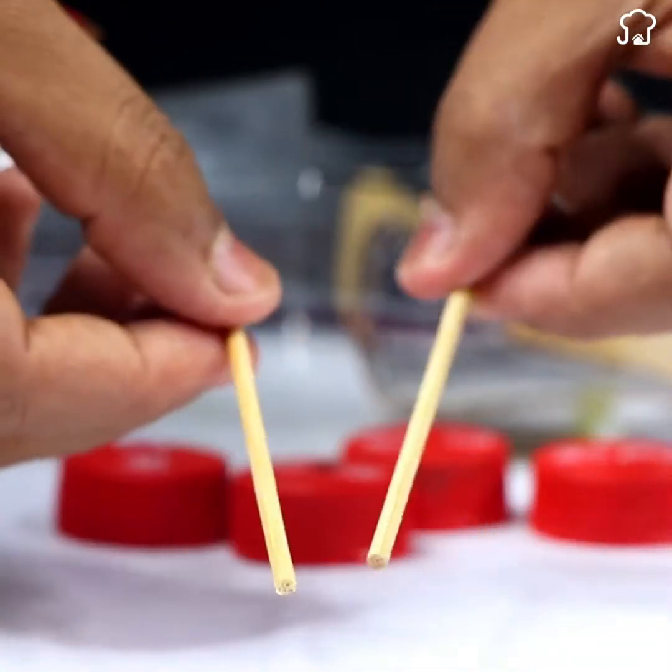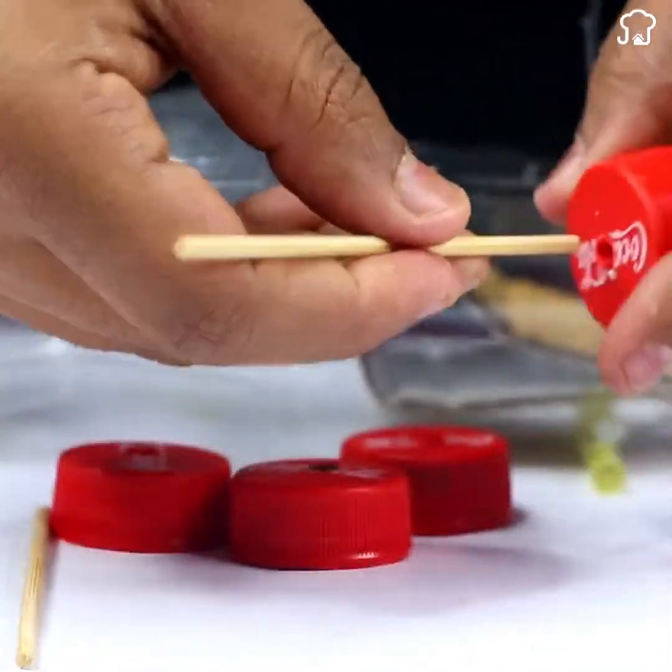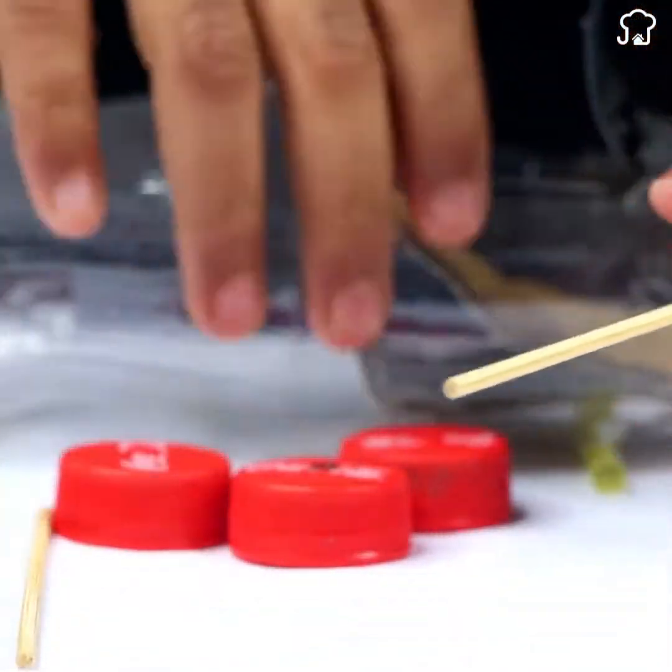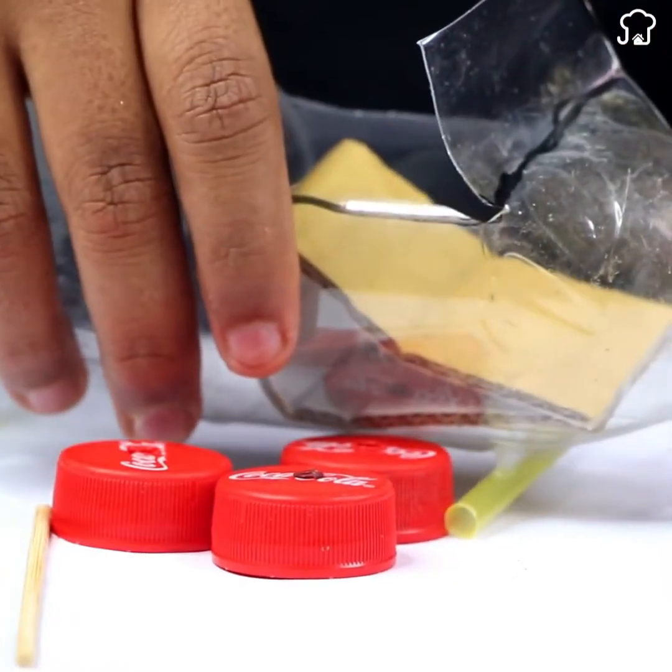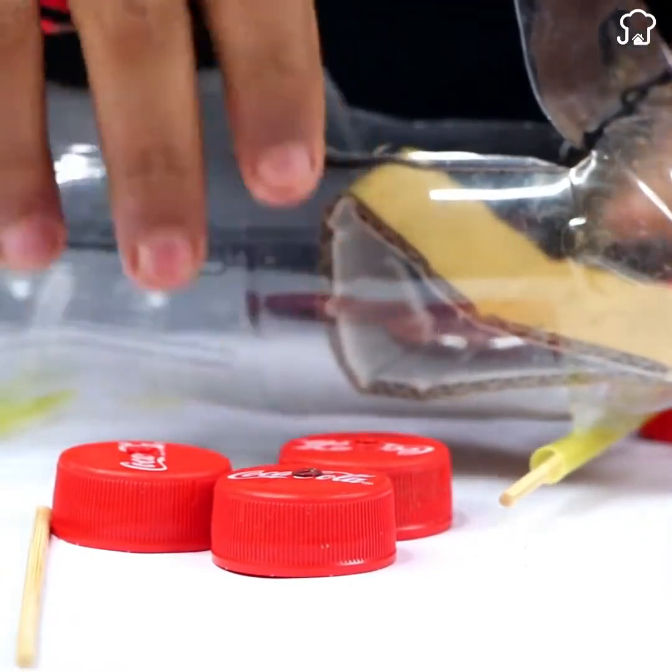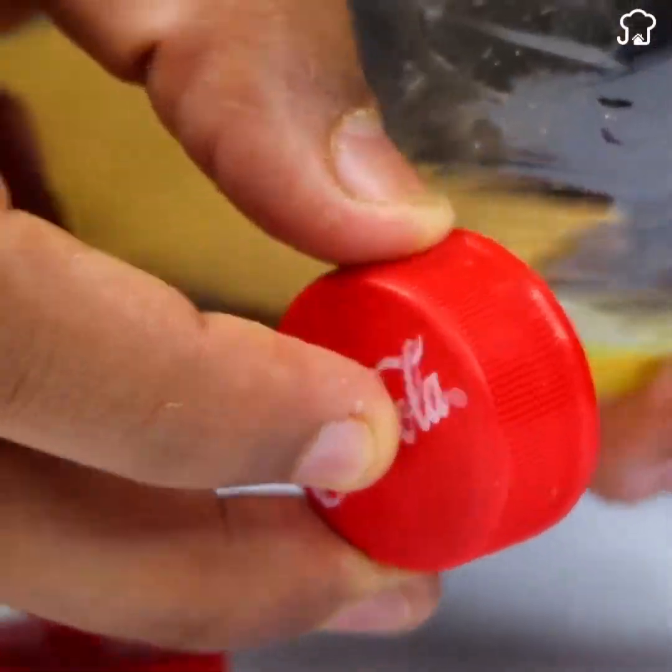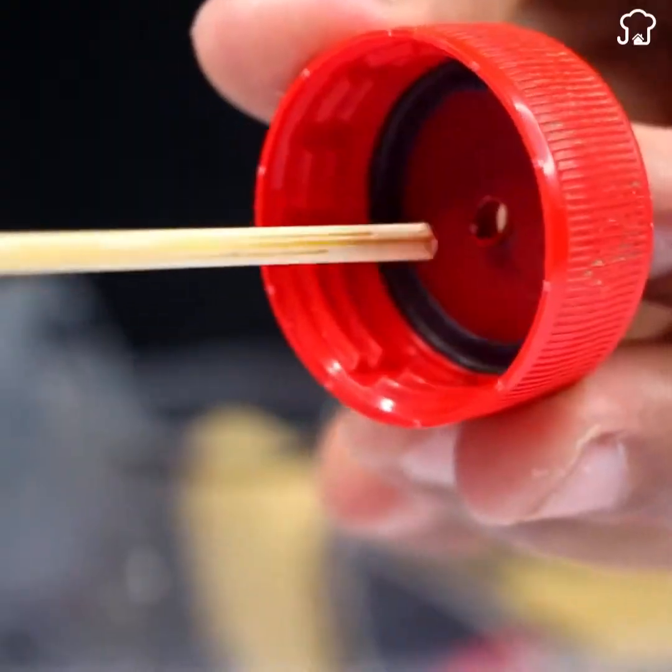Now, take two wooden sticks and thread them through the straws that are attached to the bottle. Thread the caps onto the sticks until they are secure.